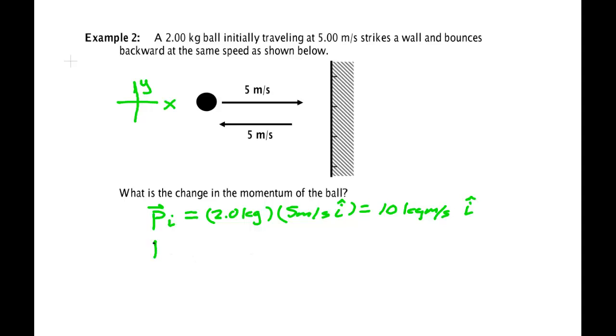Its final momentum is this arrow as it bounces back this way going the other direction. And it's 2 kilograms. In this case, it's 5 meters per second. It has the same speed but not the same velocity. Its velocity is going in the negative x. So it's minus 5 meters per second i-hat. That makes it minus 10 kilogram meters per second i-hat.